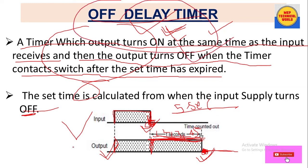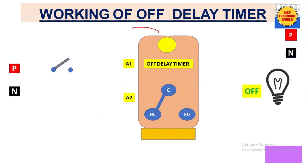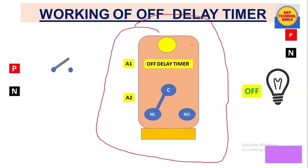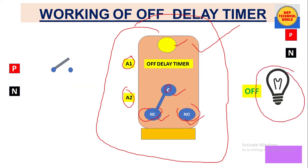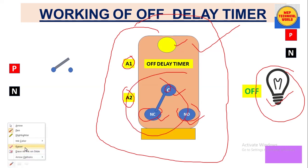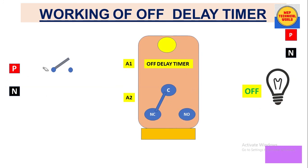Let's understand the working of the off delay timer with an animation. Here is the off delay timer with its time setting knob and coil terminals. These are the contacts: common, NC terminal, and NO terminal. Here we have taken a load that will be controlled by this timer according to the time setting.